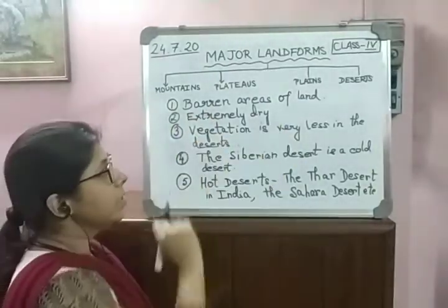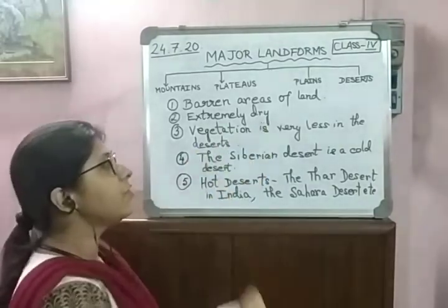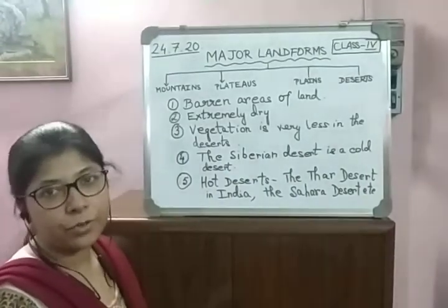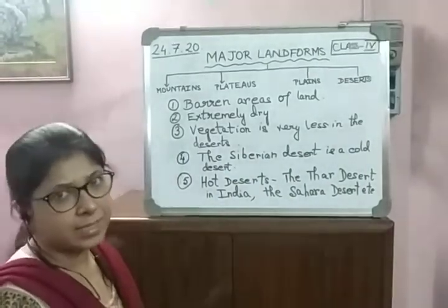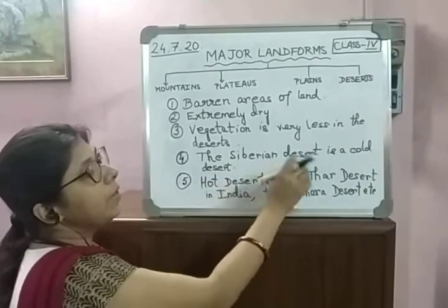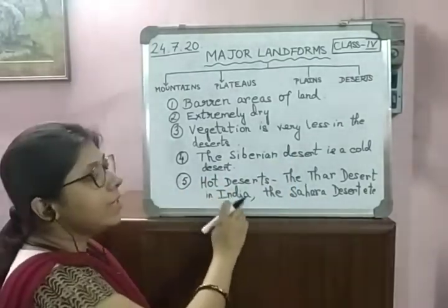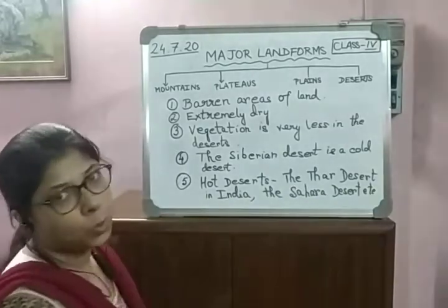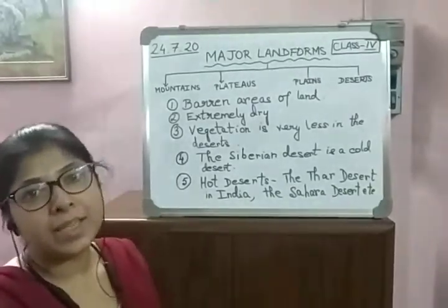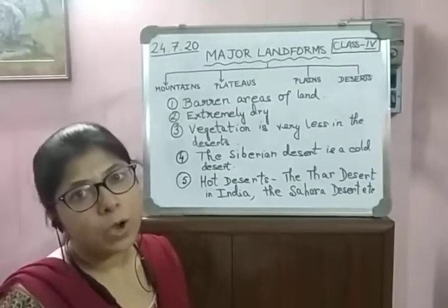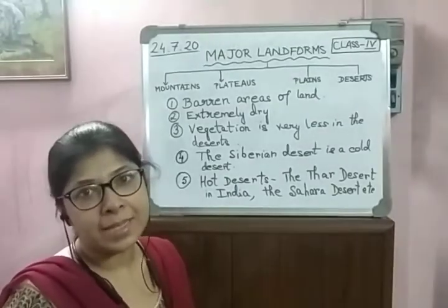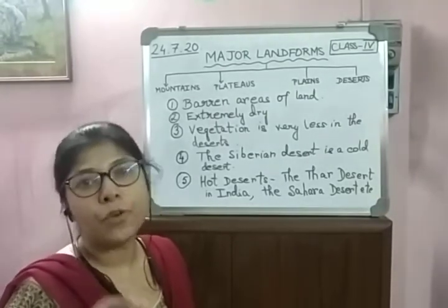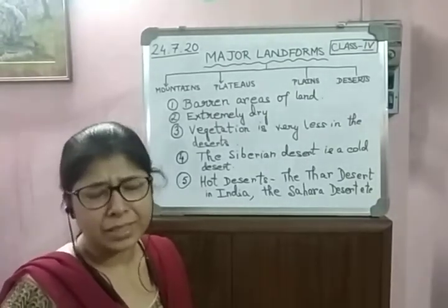So, these are the characteristics of deserts: they are barren areas of land, they are extremely dry, and vegetation is very less due to scarcity of rainfall. The Siberian desert is a cold desert, while hot deserts include the Thar desert in India, the Sahara desert, and the Gobi desert. At daytime the temperature is very hot, while at night the temperature falls rapidly and it is much cooler.